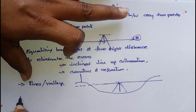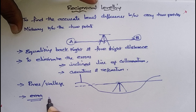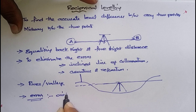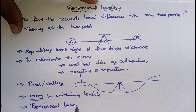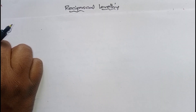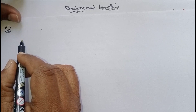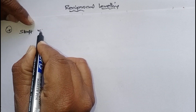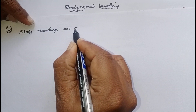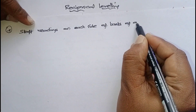To eliminate these errors, it is not possible to perform ordinary levelling. In that situation, we can go for the method of reciprocal levelling. In reciprocal levelling, we need to take staff readings on each bank of a river, on each side of the banks.